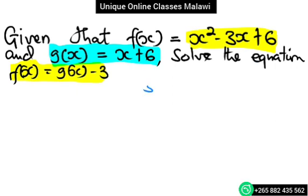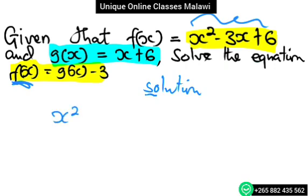So what we are going to do is substitute. We are told the function of x is this one, then we have f of x.